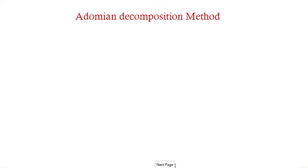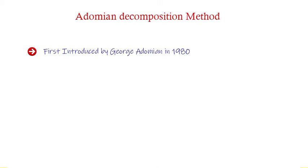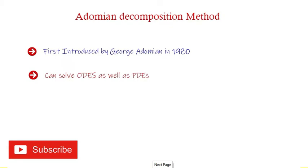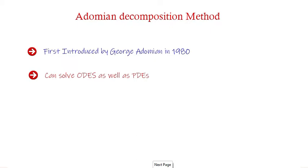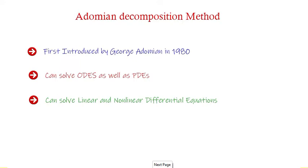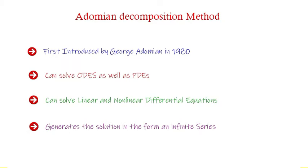This method was first introduced by George Adomian in 1980. The Adomian Decomposition Method is a powerful method — you can solve not only ODEs but also PDEs, integral equations, and fractional differential equations. It can solve both linear and nonlinear differential equations. As the name suggests, it decomposes the unknown function into the form of an infinite series, so the solution is always an infinite series that converges rapidly toward the exact solution.